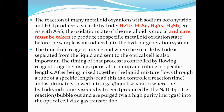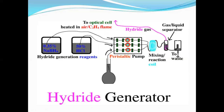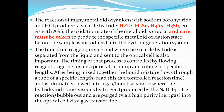To detect these metals, we generate their hydrides using the hydride generator system. As with AAS, the oxidation state of metalloids is crucial, so care must be taken to produce the specific metalloid oxidation state before the sample is introduced into the hydride generation system. We are using 0.35% NaBH4 and 50% HCl — the 50% HCl is a highly acidic solution requiring careful handling. The time of reagent mixing is also very important, controlled by flowing reagents through a peristaltic pump and tubing of specific length.